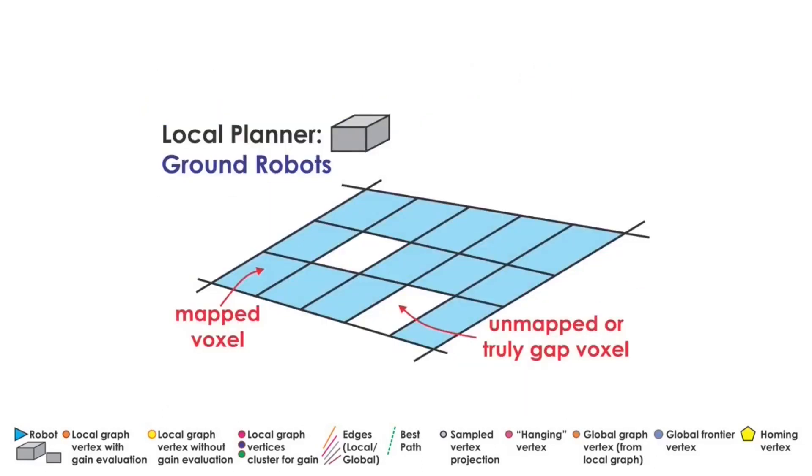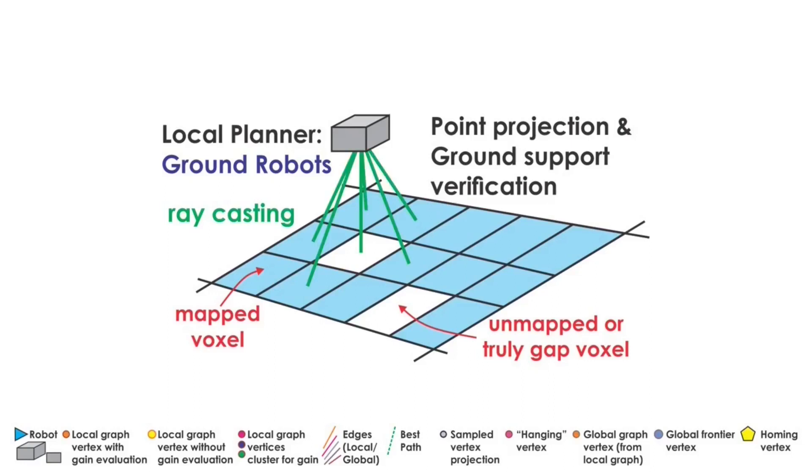Specifically for ground robots, the planning procedure involves an additional step to ensure that the graph built is traversable. This, among others, involves the verification that there exists ground under the robot to support its motion. However, the volumetric map can have gaps, especially on voxels of the terrain. Hence, not only a single but a set of rays are cast around the sampled point to optimistically verify the presence of ground.